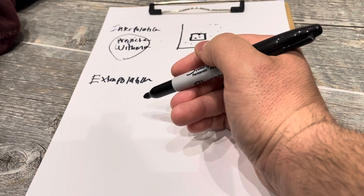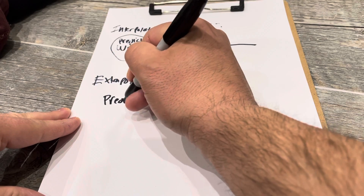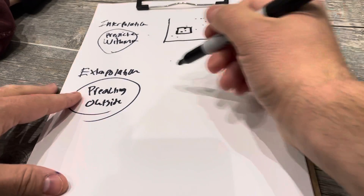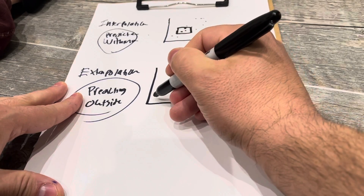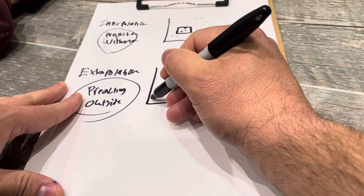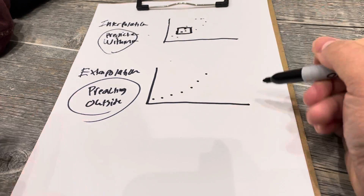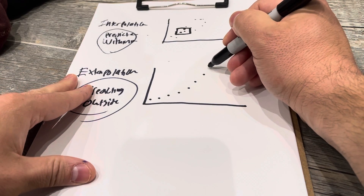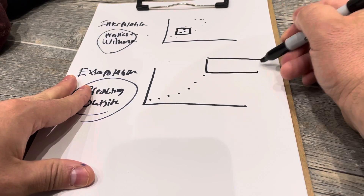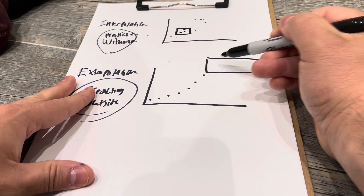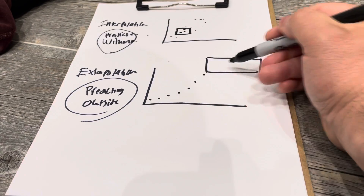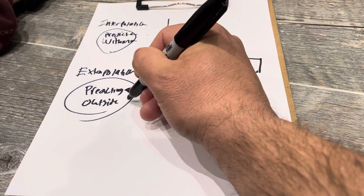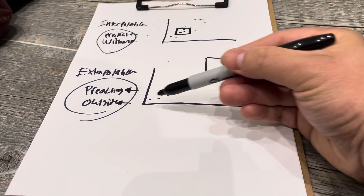Now extrapolation, on the other hand, is to predict values that fall outside of the range of data points. You are predicting a data point or multiple data points that fall outside of your existing range. Let's say you have a graph where the points form almost like a hockey stick curve — not just linear growth, but more like exponential growth.